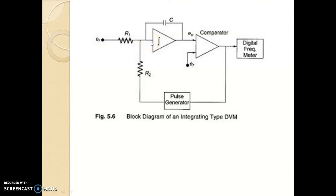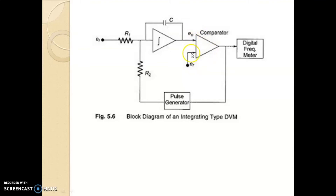The voltage to be measured is applied to the integrator. The output of the integrator is always a negative-going ramp signal. This ramp signal — the output of the integrator — goes to the comparator. The comparator has two inputs: the first input is the output of the integrator, that means the negative-going ramp signal.